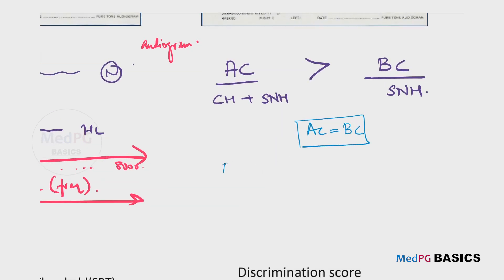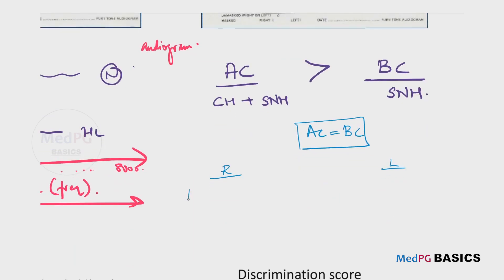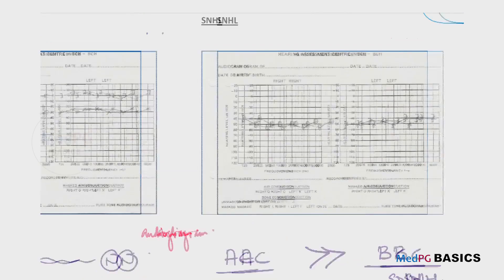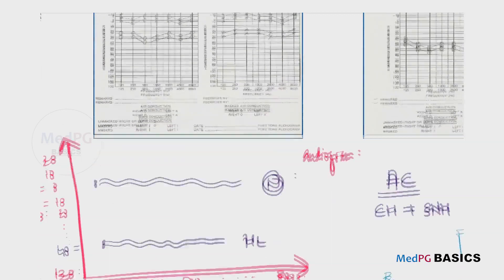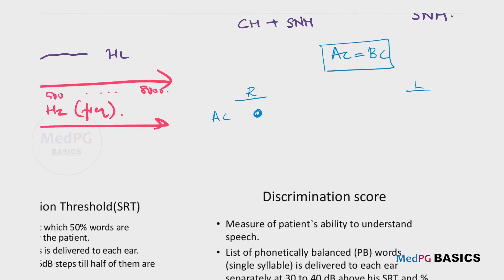We have different symbols for air conduction and bone conduction, so that by seeing the graph itself we know what is air conduction and what is bone conduction. It also varies for the right ear and the left ear. In the right ear, the air conduction is given as rounds. On the left ear, the air conduction is marked as a cross. Bone conduction in the right ear is given as a C-shaped bracket, and on the left ear, a bracket facing in the opposite direction. These are the usual symbols used in a pure tone audiogram.